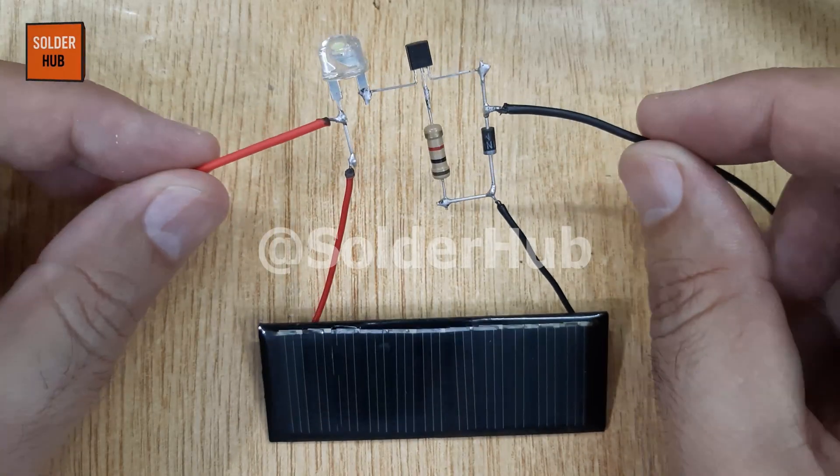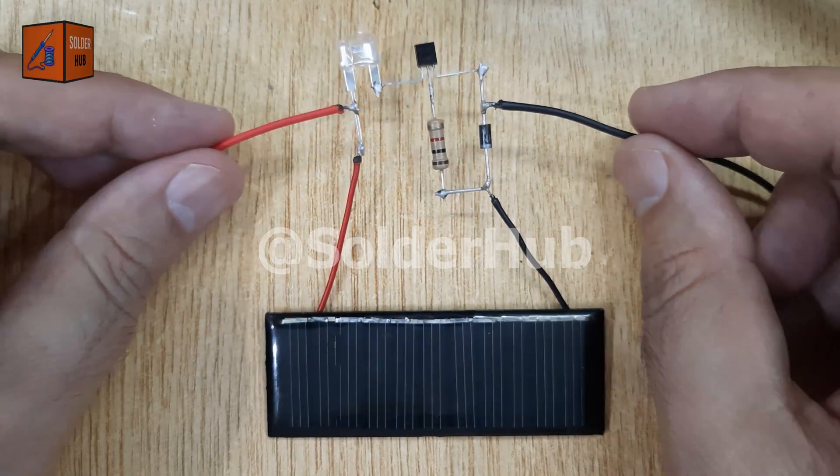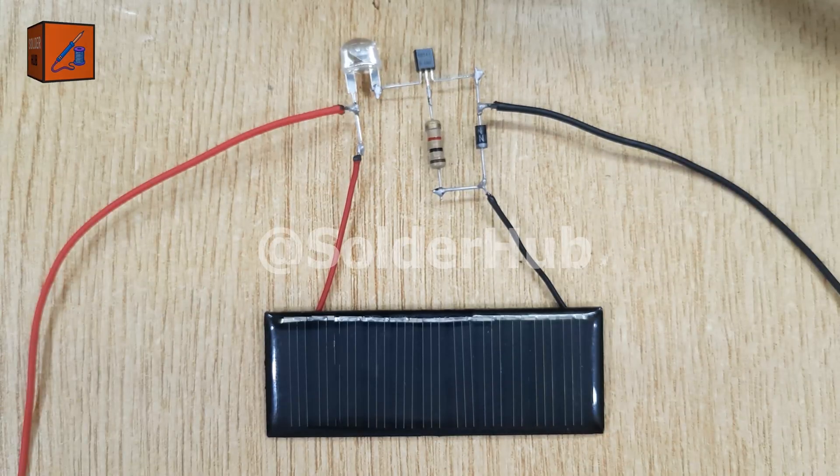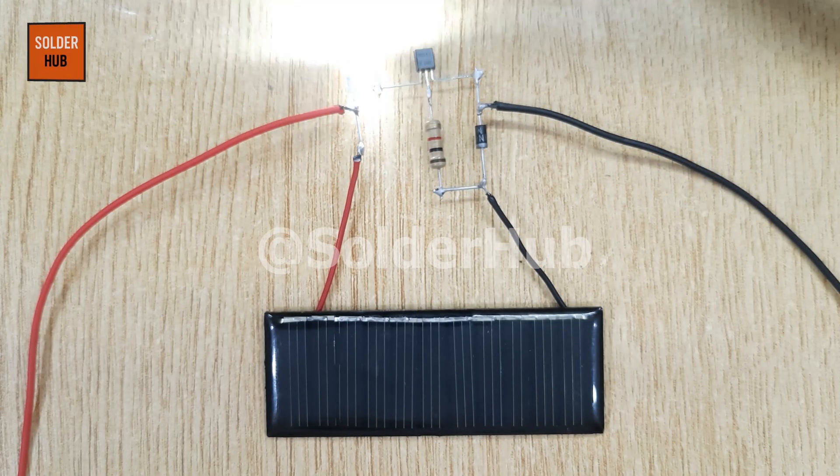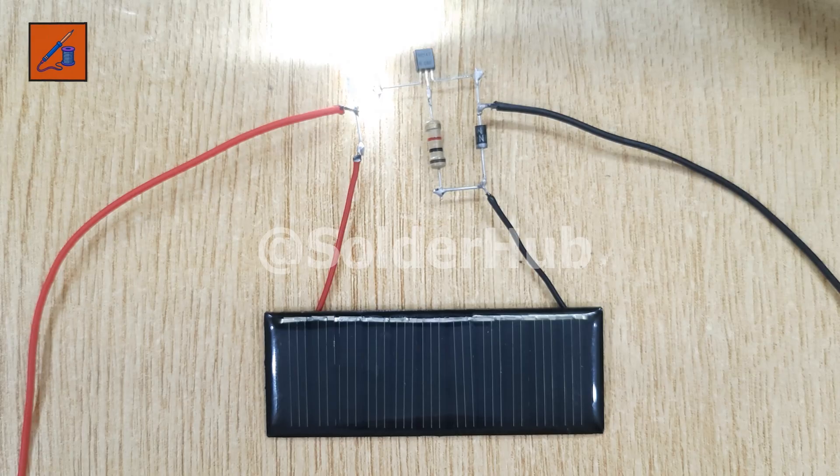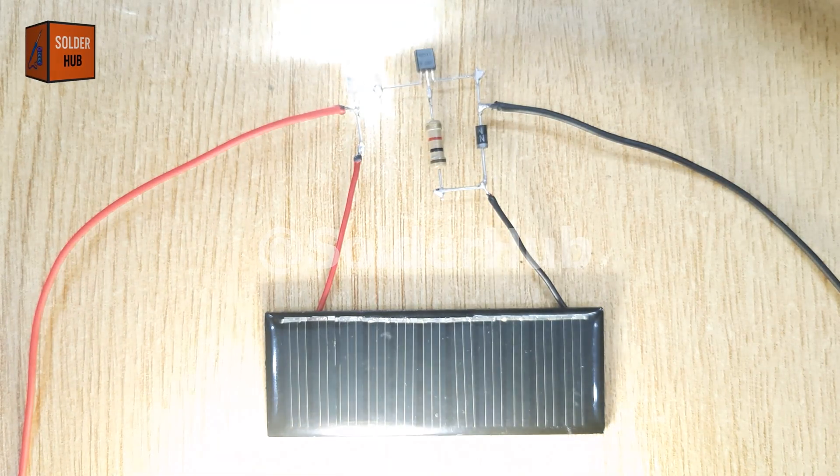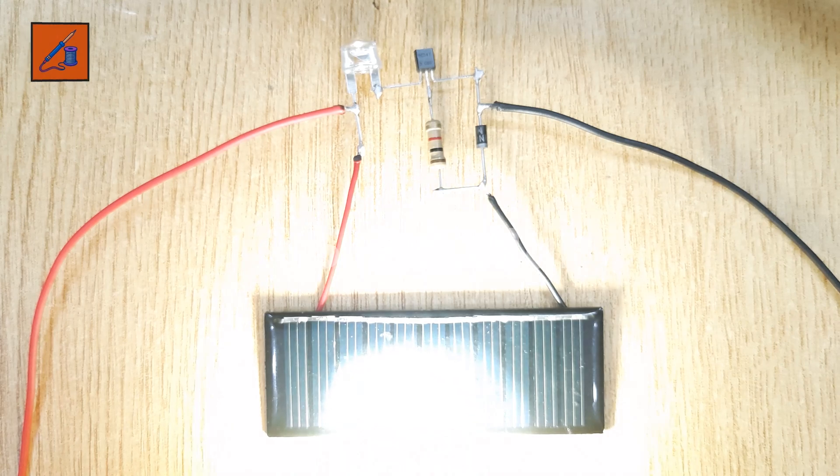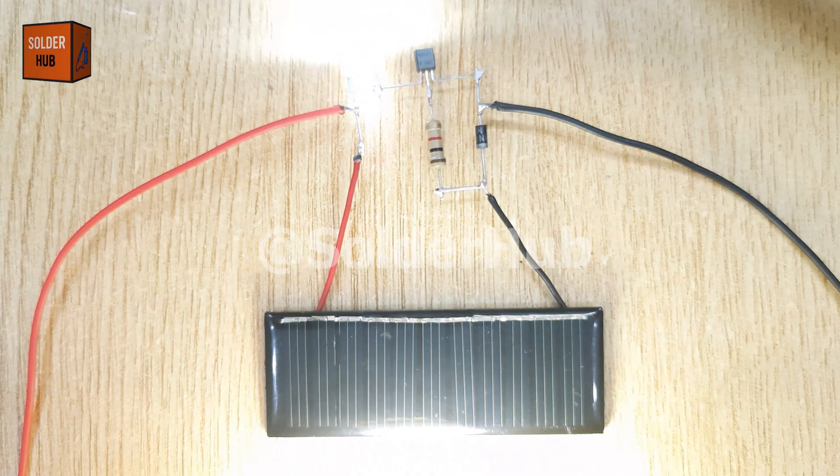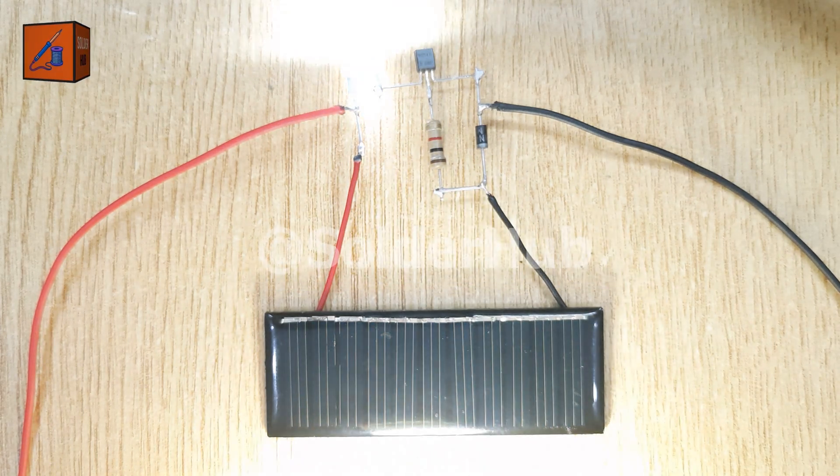Now our auto-on-off streetlight circuit is ready. Let's test it. When I connect the battery, the LED glows brightly because the solar panel is not receiving much light. But the magic happens when I shine a torch on the solar panel—the LED turns off immediately. This is exactly how a real streetlight works: it stays off during the day and switches on automatically at night.